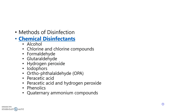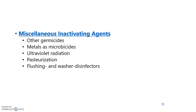The different types of chemical disinfectants include: alcohol, chlorine and chlorine compounds, formaldehyde, glutaraldehyde, hydrogen peroxide, iodophors, ortho-phthalaldehyde, peracetic acid, peracetic acid and hydrogen peroxide combination, phenolics, and quaternary ammonium compounds. Miscellaneous inactivating agents include other germicides, metals as microbicides, ultraviolet radiation, pasteurization, and flushing and washer disinfectants. These are all important agents under chemical disinfection. The rest will be discussed next time — thank you all.